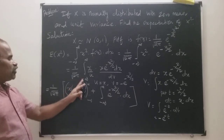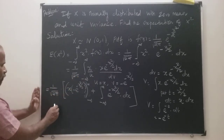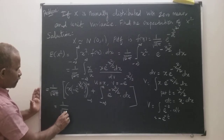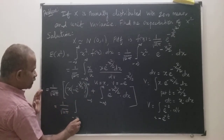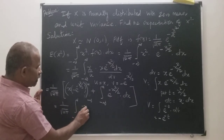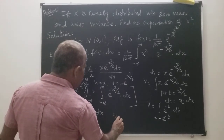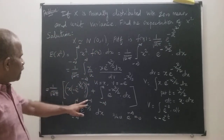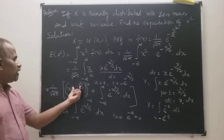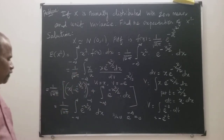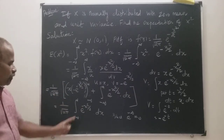Applying the upper limit: e to the power minus infinity is 0. Again, e to the power minus infinity is also 0. So the boundary term uv becomes 0. Therefore, this equals 1 by square root of 2π times the integral from minus infinity to plus infinity of e to the power minus x squared by 2 dx. Since e to the power minus infinity equals 0, multiplying anything with 0 gives 0.